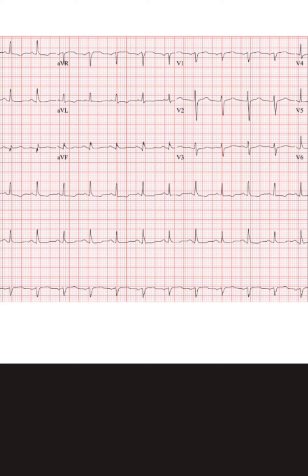It must be noted that this triad is highly specific but not very sensitive for pericardial effusion. There might be QRS voltage variation with normal respiration, in atrial fibrillation, in paroxysmal supraventricular tachycardia — especially AVRT — and in ventricular tachycardia. Electrical alternance of pericardial effusion is different from the arrhythmic cause of electrical alternance.